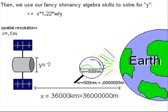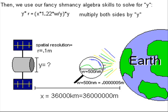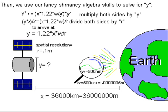Then, we just have to solve for y, and that's pretty easy with algebra. We multiply both sides by y, divide by r, cancel everything out, and we arrive at y equals 1.22 times the distance times the wavelength, divided by what we want our resolution to be.